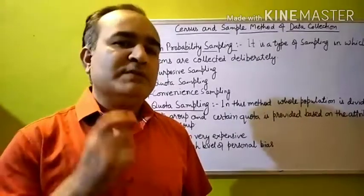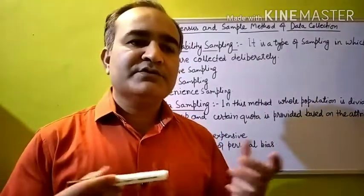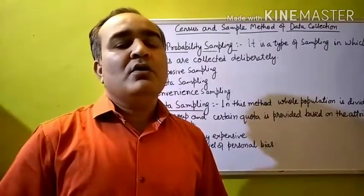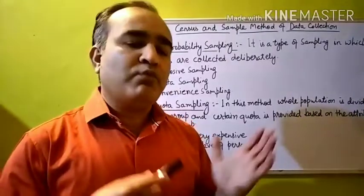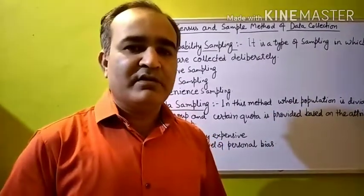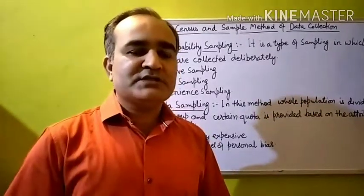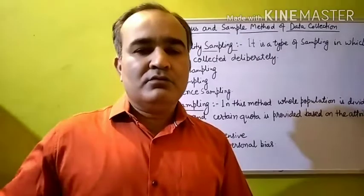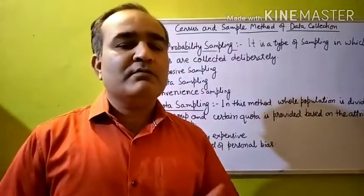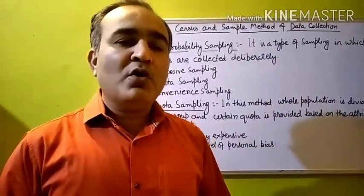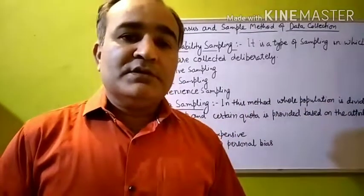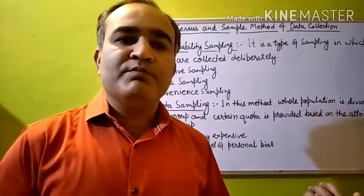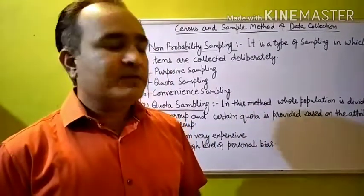A very good example for quota sampling is the Indian Reservation System, which divides society based on caste. Based on caste characteristics, certain quotas are provided — like SC, ST, OBC, and General. Suppose a college has an admission process going on and allocates seats to applicants according to certain quotas from their application forms. This is a very good example of quota sampling used in surveys and investigations.